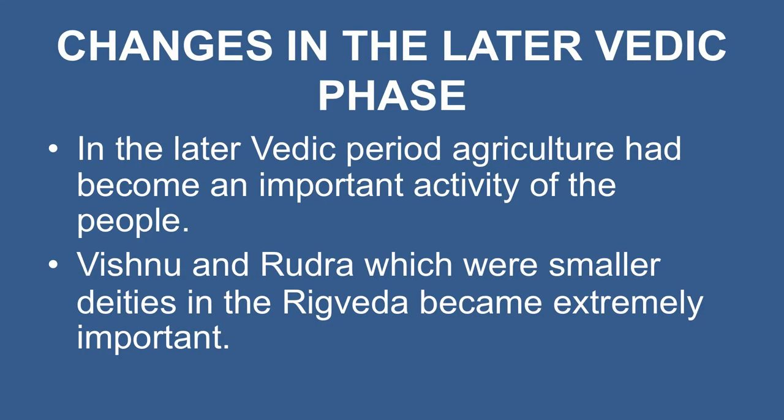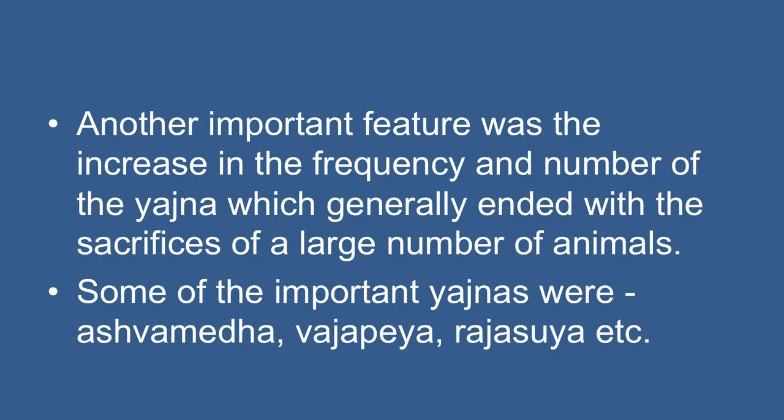In the later Vedic period, agriculture had become an important activity. Changes in material life naturally resulted in a change in attitude towards gods and goddesses. Continuous interaction with the local non-Aryan population also contributed to these changes. Thus, Vishnu and Rudra, which were minor deities in the Rig Veda, became extremely important. Another important feature was the increase in frequency and number of Yajna, which generally ended with the sacrifice of a large number of animals. This was probably the result of the growing importance of the Brahmin class. The Yajna brought them large amounts of wealth in the form of dana and dakshina. The most important Yajnas were the Ashvamedha, Vajapeya, and Rajasuya.